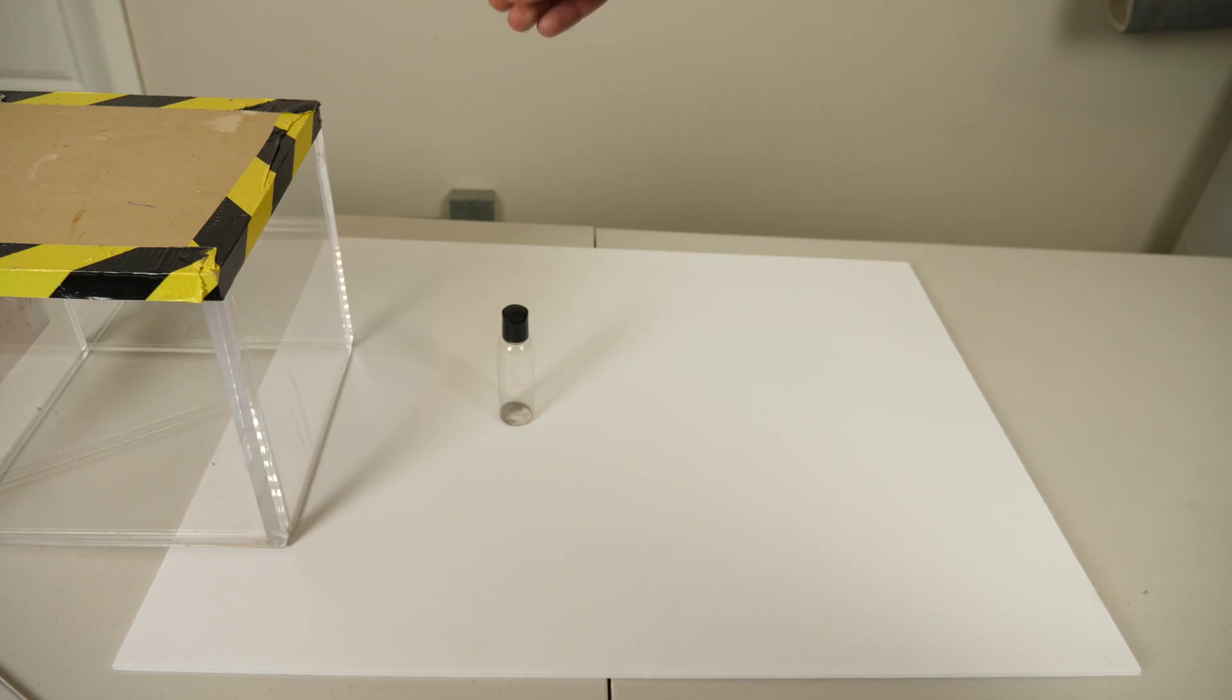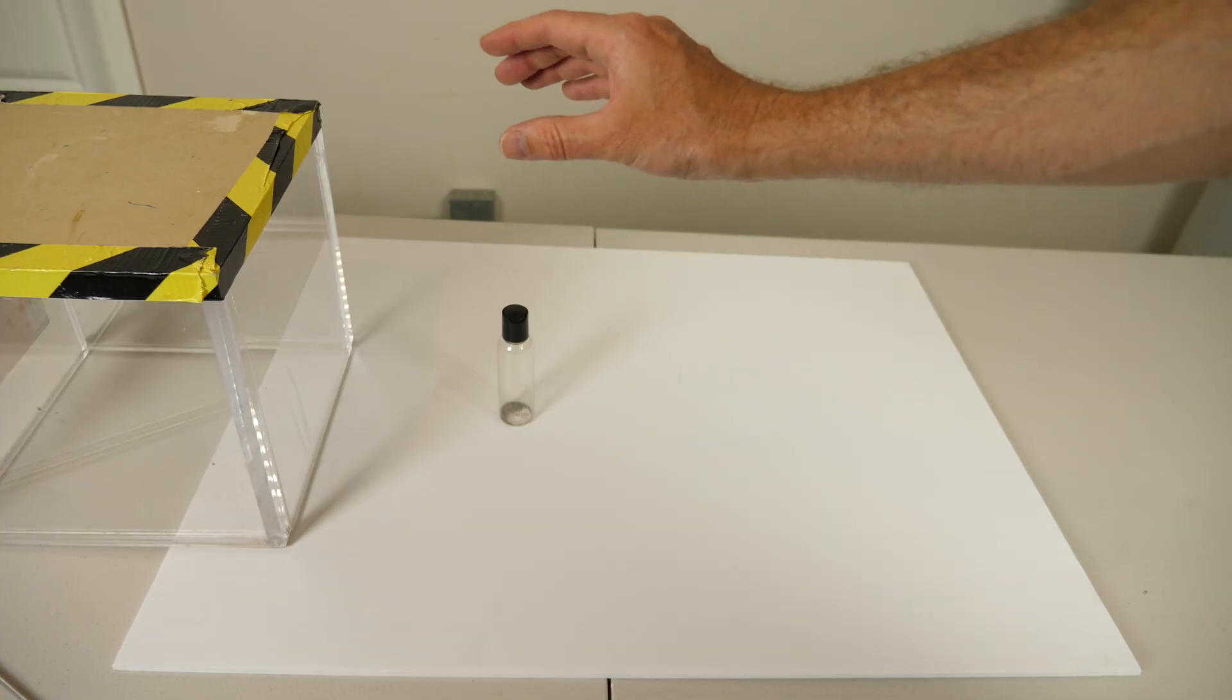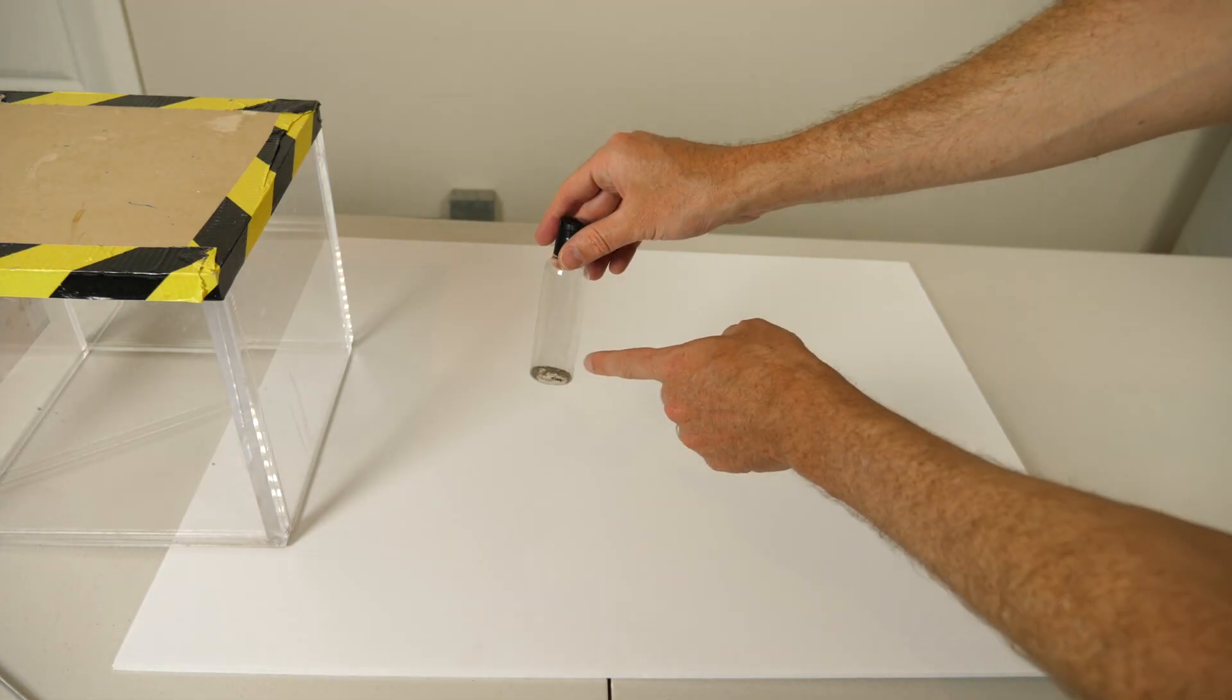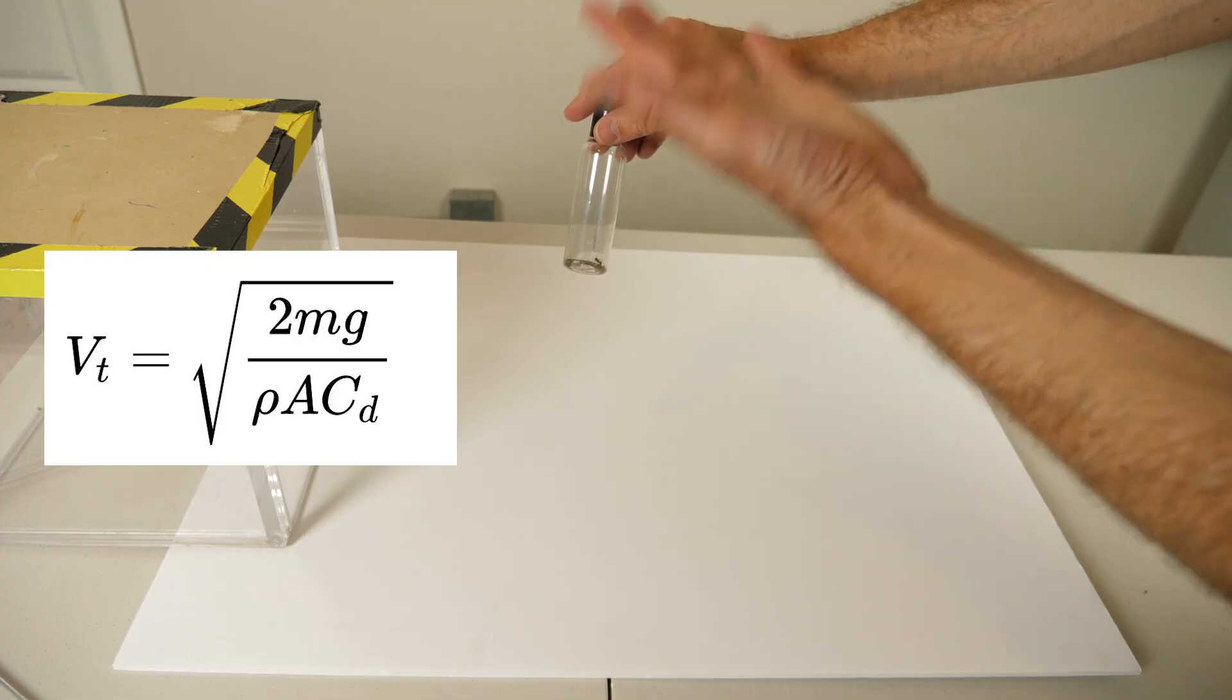So as you drop something, initially it drops and it accelerates at a constant acceleration. But as it gets moving faster and faster, the airspeed around it gets higher and higher. And eventually that airspeed gets pushing on it fast enough that it stops accelerating altogether and starts just moving at a constant velocity. So that means that no matter how high you drop something, eventually it reaches a constant velocity. And that velocity is called its terminal velocity. So terminal velocity is actually proportional to mass divided by a projected area.